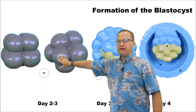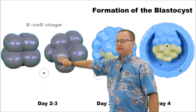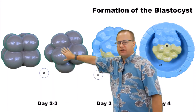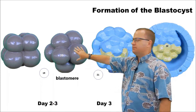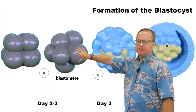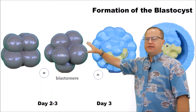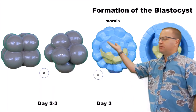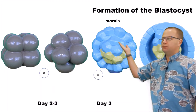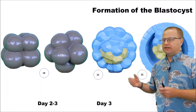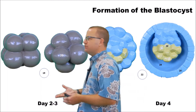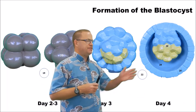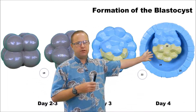Here you can see we're probably at an eight cell stage — you can see eight different cells — and these cells are called blastomeres. Blastomeres are just the embryonic cells that are part of that embryo. Eventually we're going to form something called a morula. A morula is a solid ball of cells, which is about sixteen cells or more in composition. That morula is going to continue to divide mitotically through cleavage to give us a hollow ball of cells, which is called a blastocyst.